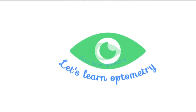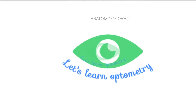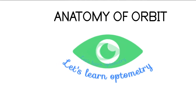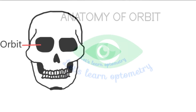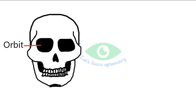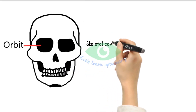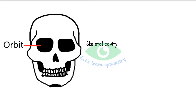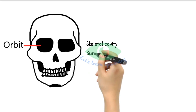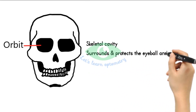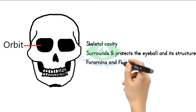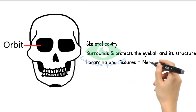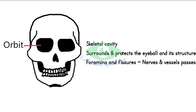Hello all, welcome to Let's Learn Optometry. In this video we will see the anatomy of the orbit. The orbit is a skeletal cavity situated within the skull. It surrounds and protects the eyeball and its structures. It contains several foramina and fissures through which important nerves and vessels pass through.